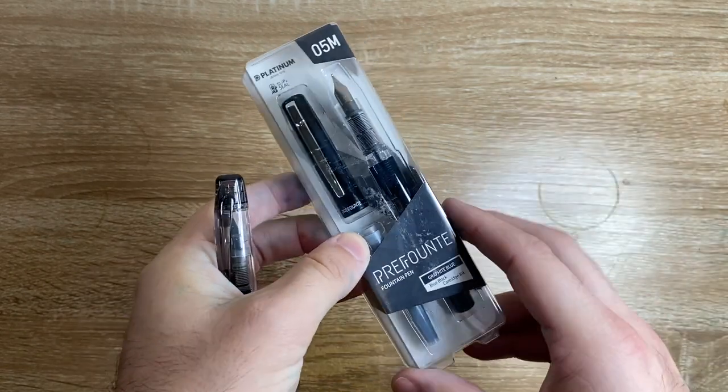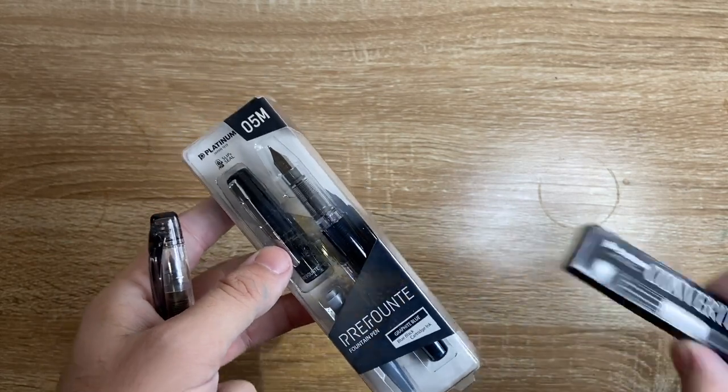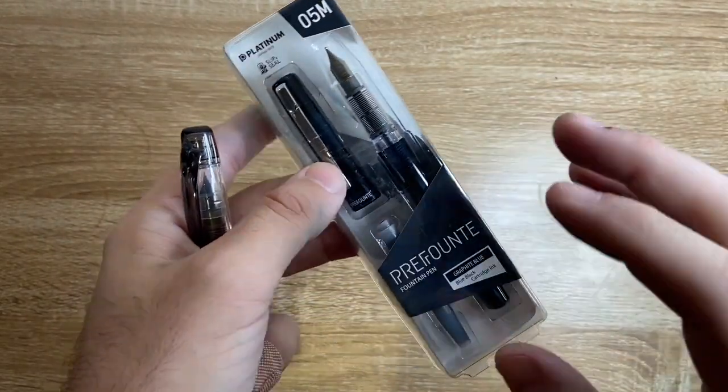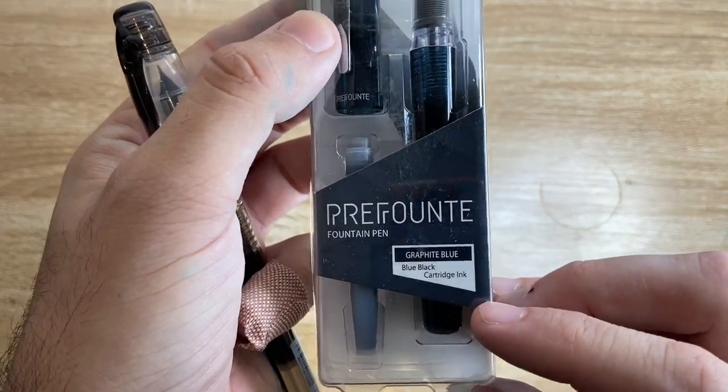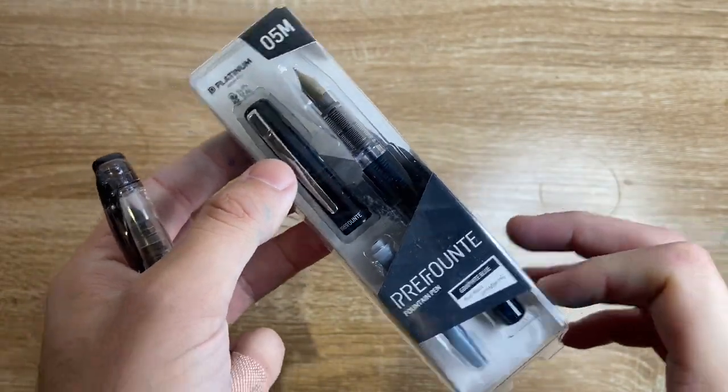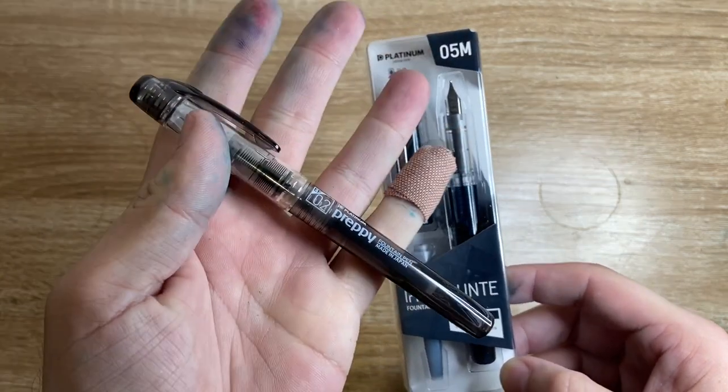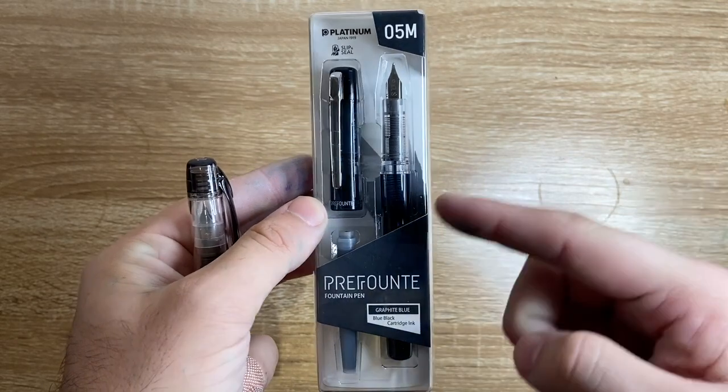So I'm going to do a quick little unboxing of this pen. I've got a converter here which I'm going to put in it, just a Platinum converter. I don't like Platinum Blue Black and this comes with the Platinum Blue Black cartridge, so I'm going to put a converter in it, ink it up with something else, probably the new Twisby Blue Black. And then we'll have a look at this pen, we'll have a look at it in comparison to the Preppy and see how it writes.